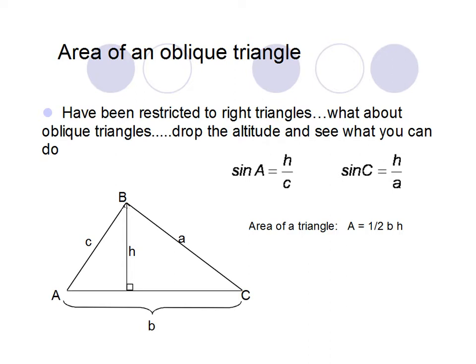Before I jump into the Law of Sines, I want to look at just an area problem. I've given you a nice oblique triangle, triangle ABC. Because it's oblique, we don't really know what to do with it, so I'm going to drop the altitude. The altitude of a triangle is always dropped perpendicular. By dropping the altitude, I've gained two separate right triangles, and since they're right triangles, I can use SOHCAHTOA.